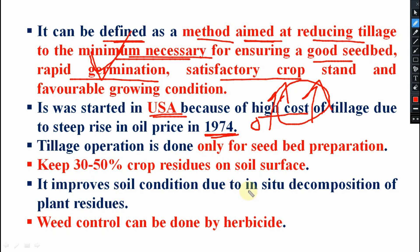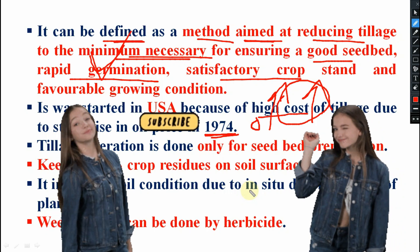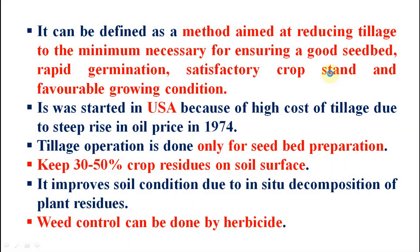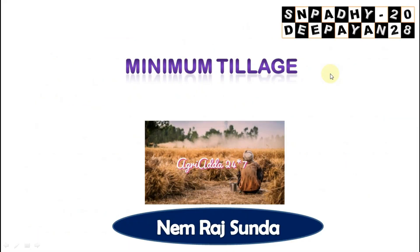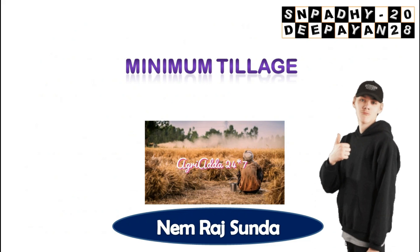In zero tillage, residue retention was 50 to 100 percent; here in minimum tillage it is 30 to 50 percent. It improves soil condition due to in-situ decomposition of plant residues — the residues act as green manure. Weed control can be done by herbicides. So thank you for watching, have a nice day.